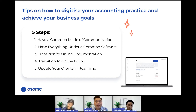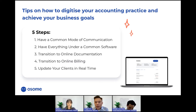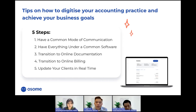Step four: transition to online billing. In addition to digitizing incoming paper receipts, you can eliminate paper from your own billing. By moving to an electronic billing system, you can automatically send bills to clients, remind them of due dates, and reduce the carbon footprint of your firm — making it more eco-friendly. Step five: update your clients in real time. The old-fashioned practice of spending days to offer accounting insights no longer has to be the norm.